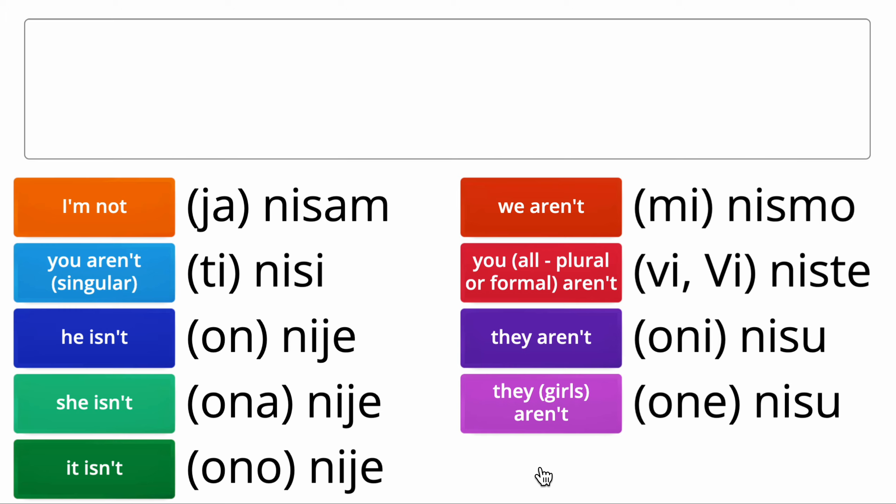When giving the short answer to a question, we drop the subject — we drop the personal pronoun. For example: Jesi li ti Robert? — Are you Robert? The answer is simply: Nisam. We would never say ja nisam.